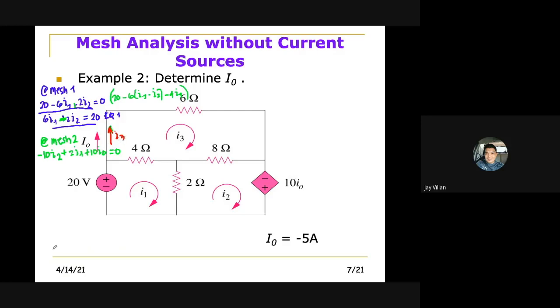Then we can also say that here, we can just substitute I3 here. So minus 10I2, plus 2I1, plus 10I3, is equal to 0.